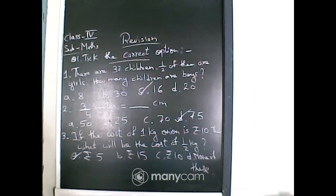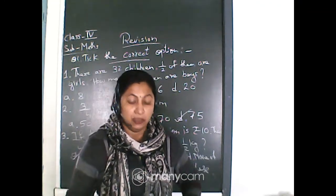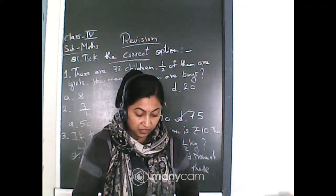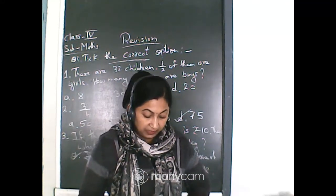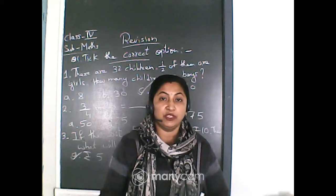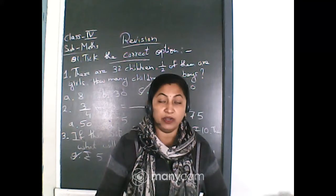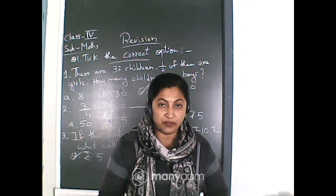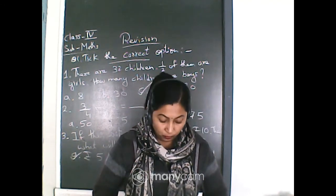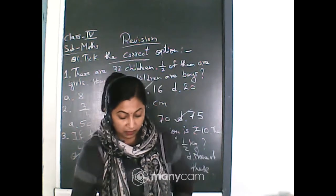Similarly, if the cost of different vegetables are given and you have to find the cost of half kg or 3/4 kg or 1/6 kg or 1/4 kg, you do it like this: see what is the cost of 1 kg, then divide it by 2 if it is half kg, or divide by 4 if it is 1/4 kg. Like this you will find the cost of different vegetables.